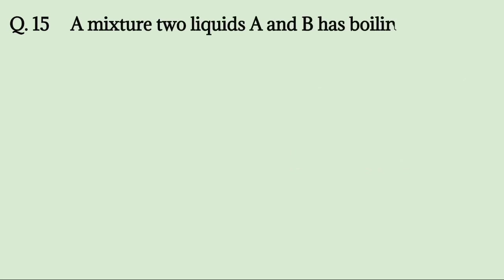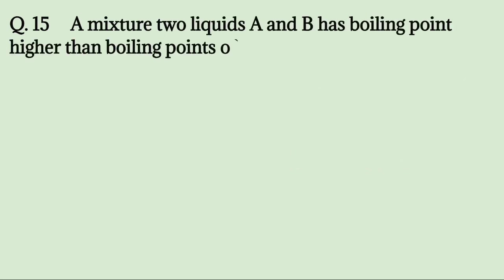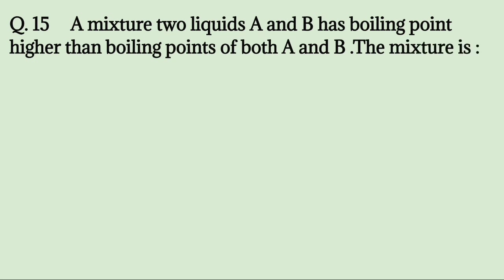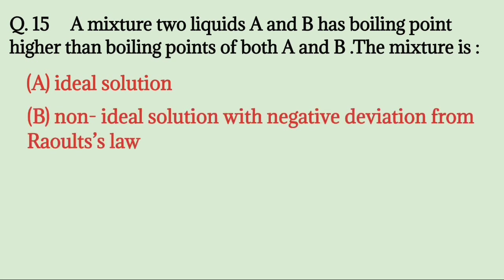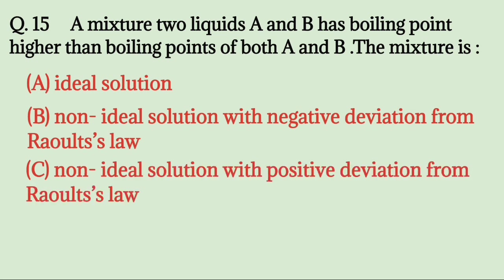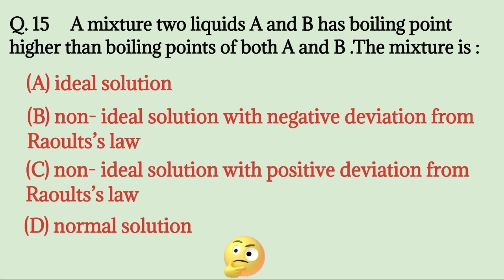A mixture of two liquids A and B has a boiling point higher than the boiling points of both A and B. The mixture is: A. Ideal solution, B. Non-ideal solution with negative deviation from Raoult's law, C. Non-ideal solution with positive deviation from Raoult's law, D. Normal solution. Try to solve it. The correct answer is B.